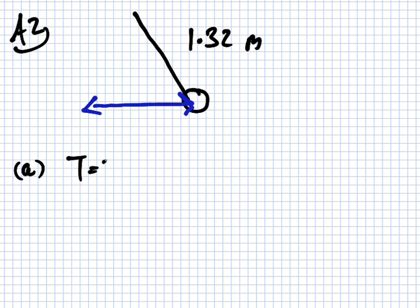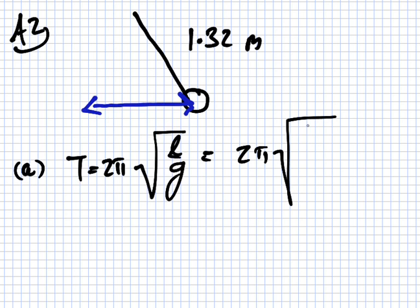Now everybody knows this from their lab report number 2. T equals 2π√(L/g). So T is 2π√(1.32/9.81).